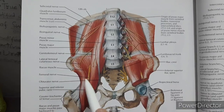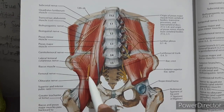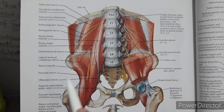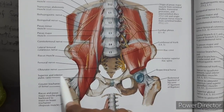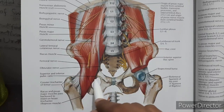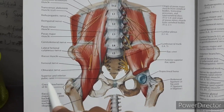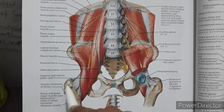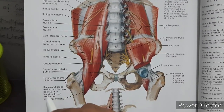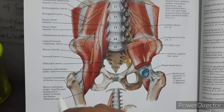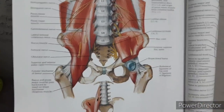The femoral nerve arises from the dorsal division of L2, L3, and L4. The obturator nerve arises from the ventral division of L2, L3, and L4. Also shown are the superior and inferior pubic ramus and the greater trochanter of the femur. The iliacus and psoas major muscles pass posteriorly to insert on the lesser trochanter as the iliopsoas.